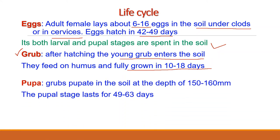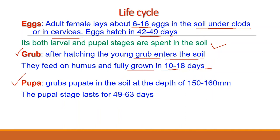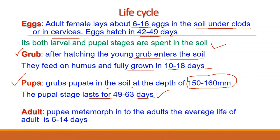After hatching, young grubs enter the soil and feed on humus, becoming fully grown in 10 to 18 days. The fully grown grubs pupate in the soil at a depth of 150 mm to 160 mm below the ground. The pupal stage lasts for 49 to 63 days. The pupae then metamorph into adults, and the average life of the adult moth is 6 to 14 days.